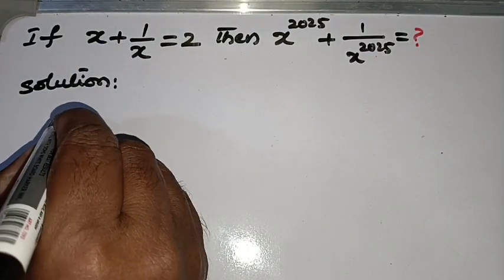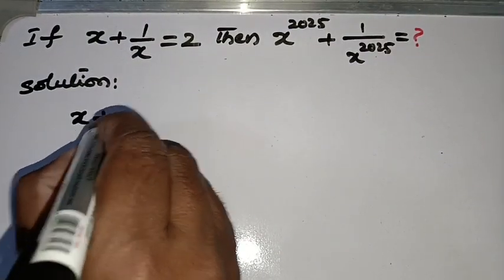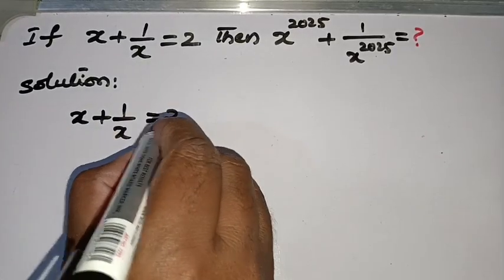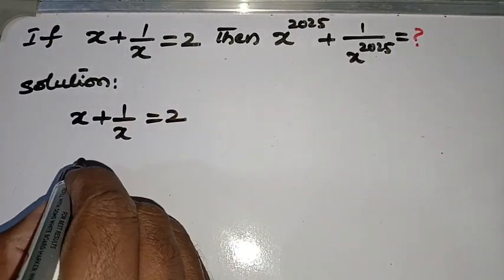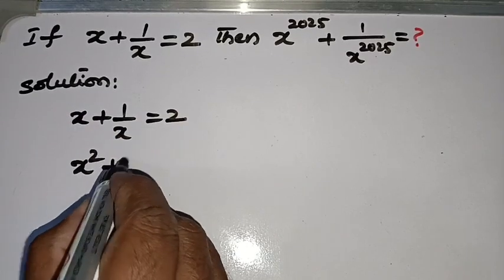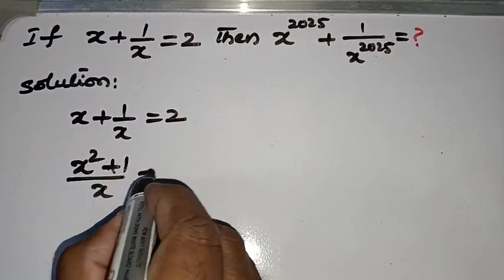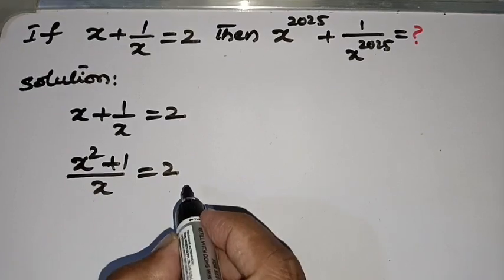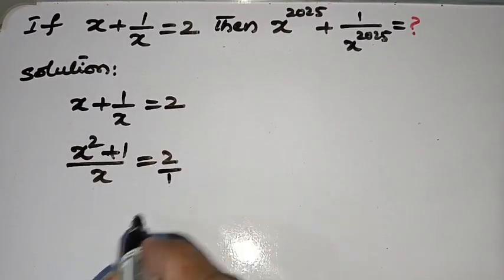The given equation is x plus 1 by x is equal to 2. So we can rewrite it as x into x, x square plus 1 by x is equal to 2. And here it is divided by 1.